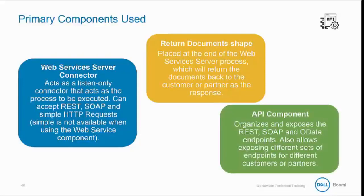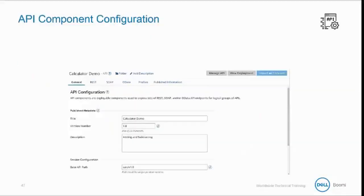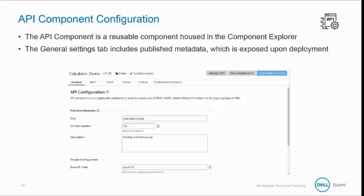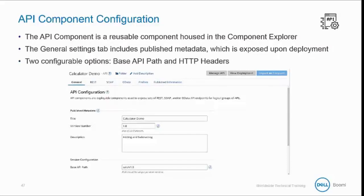Finally, the API component itself organizes and exposes the REST, SOAP, and OData endpoints. The API component also allows exposing different sets of endpoints for different customers or partners. The API component is a reusable component housed in the Component Explorer. The General Settings tab includes published metadata, which is exposed upon deployment, with two configurable options: the base API path and HTTP headers.